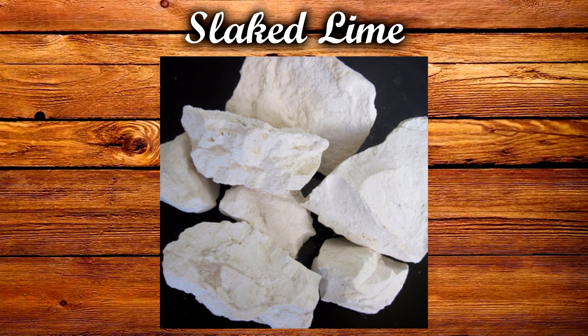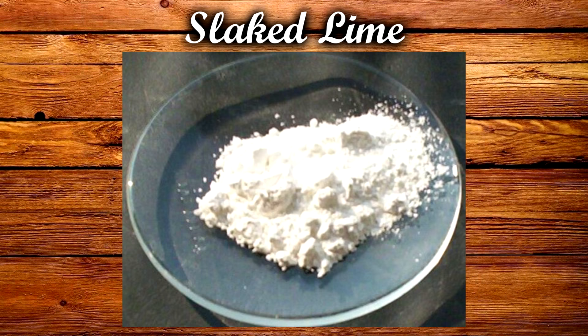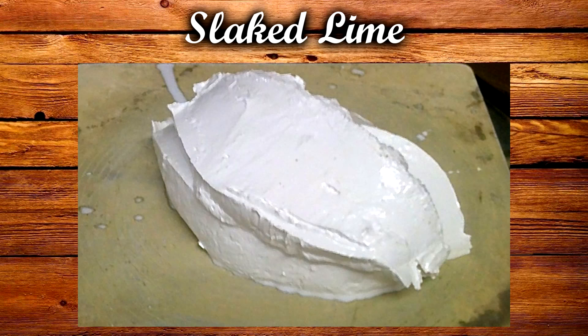Once the quicklime was produced, they could then turn it into slaked lime by adding water. Dry slaking is when quicklime is slaked with just enough water to hydrate it, but not too much, so it remains in a powder form. In wet slaking, an excess of water is added to hydrate the quicklime, and it forms a sort of lime putty.